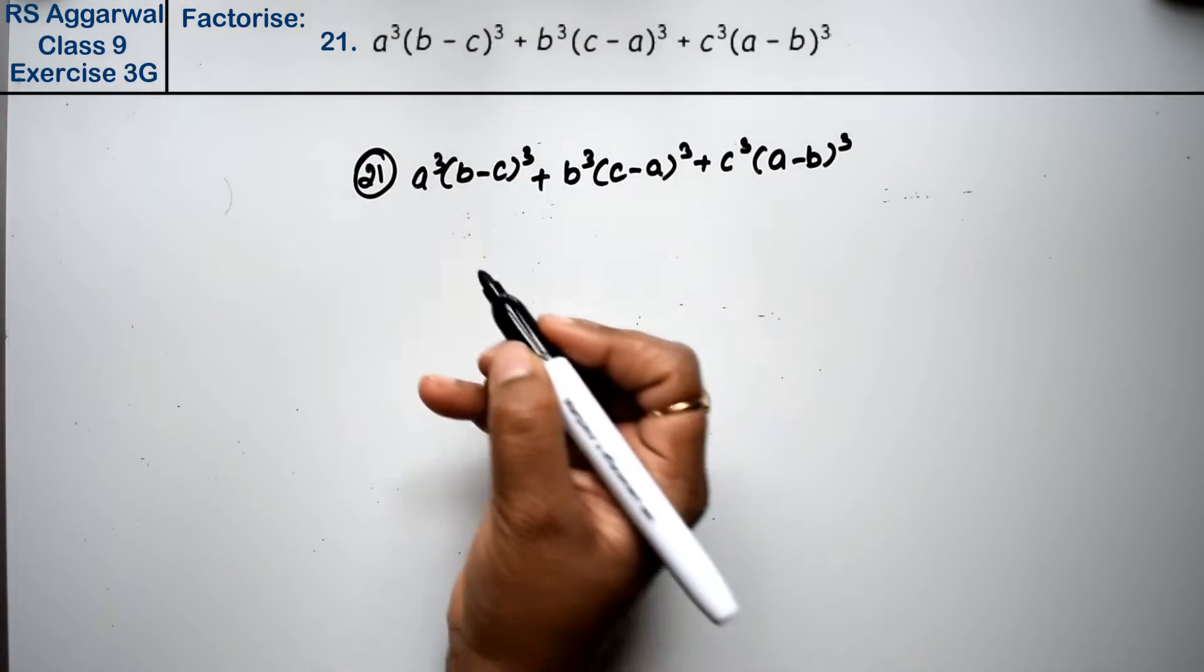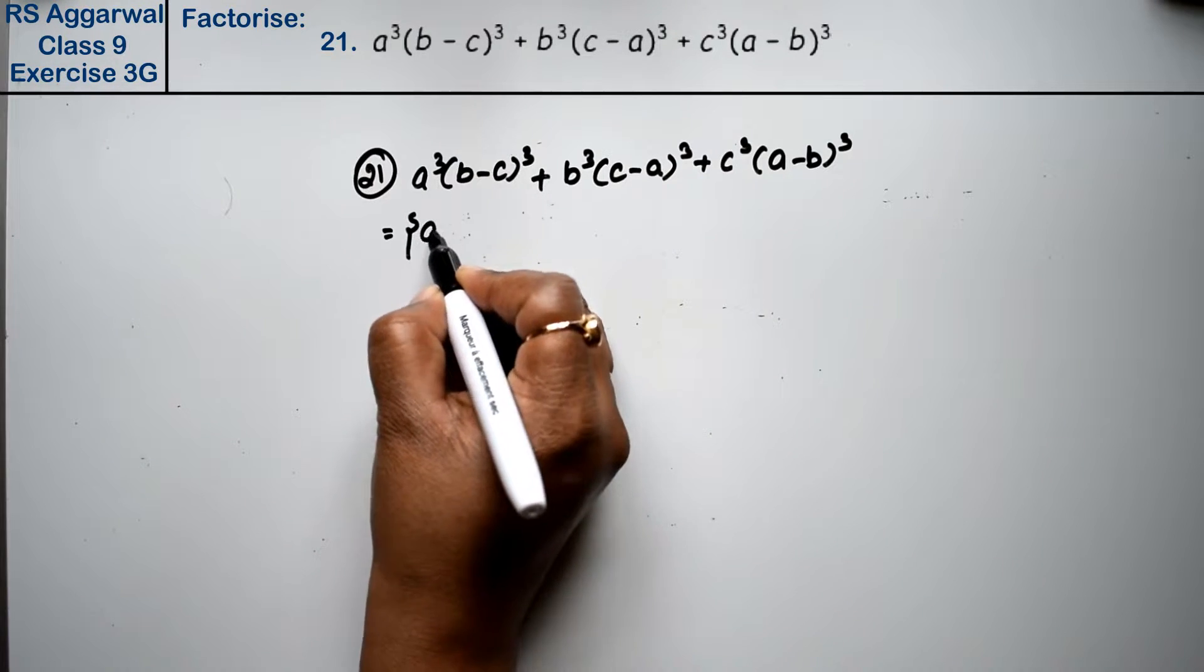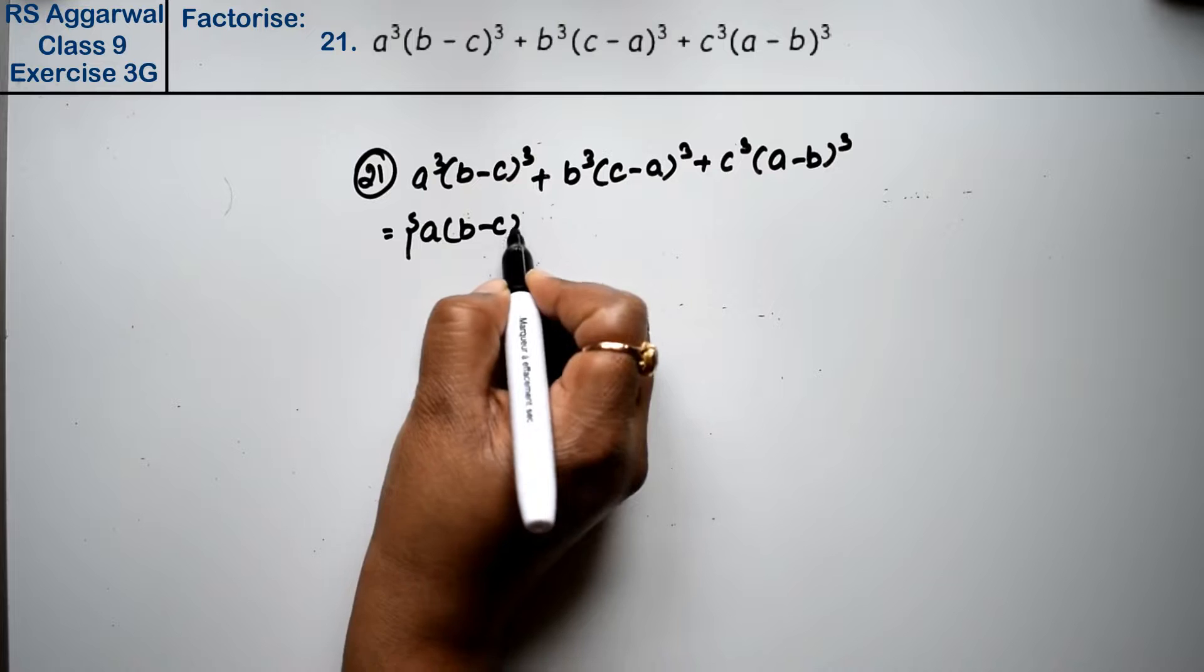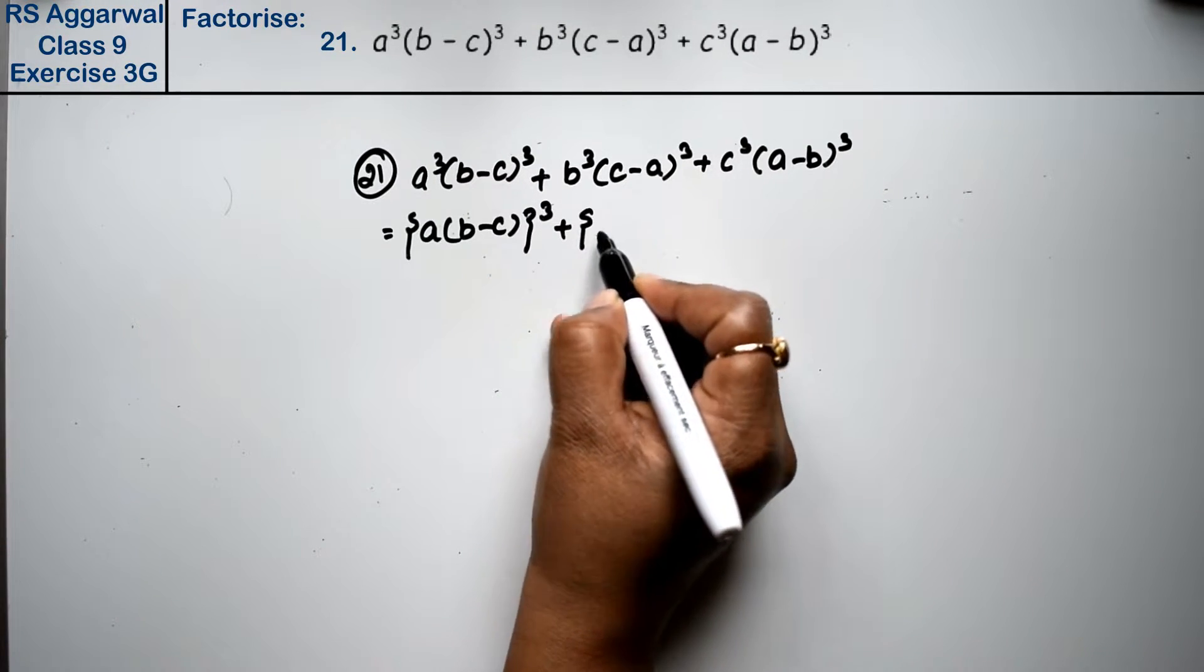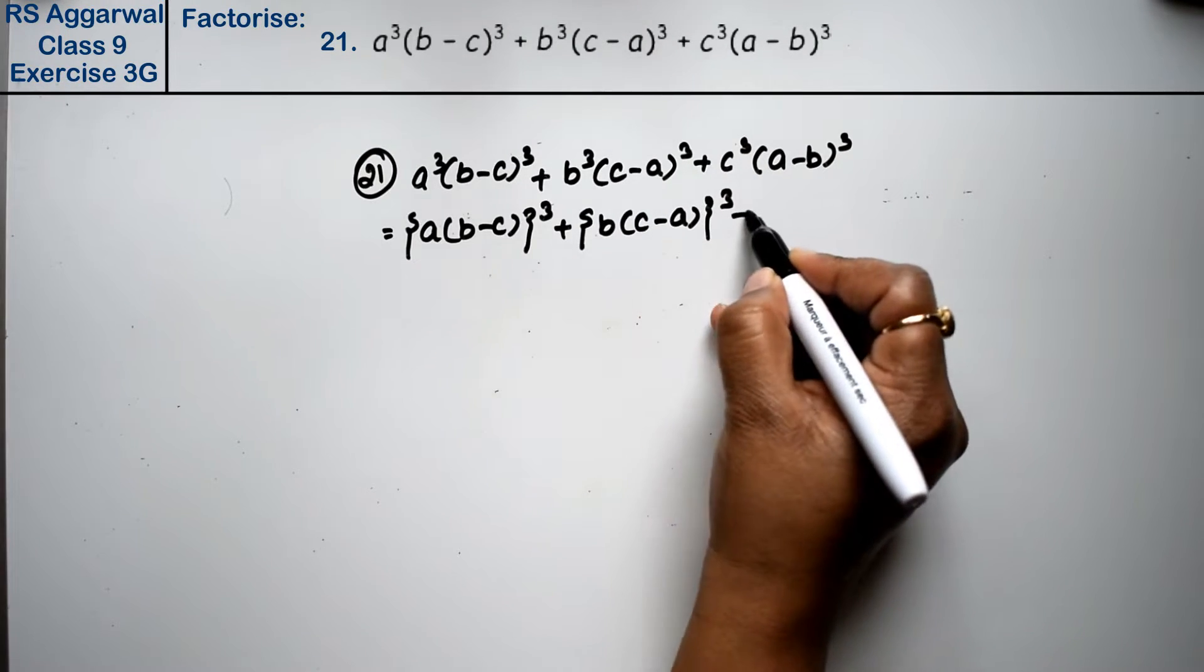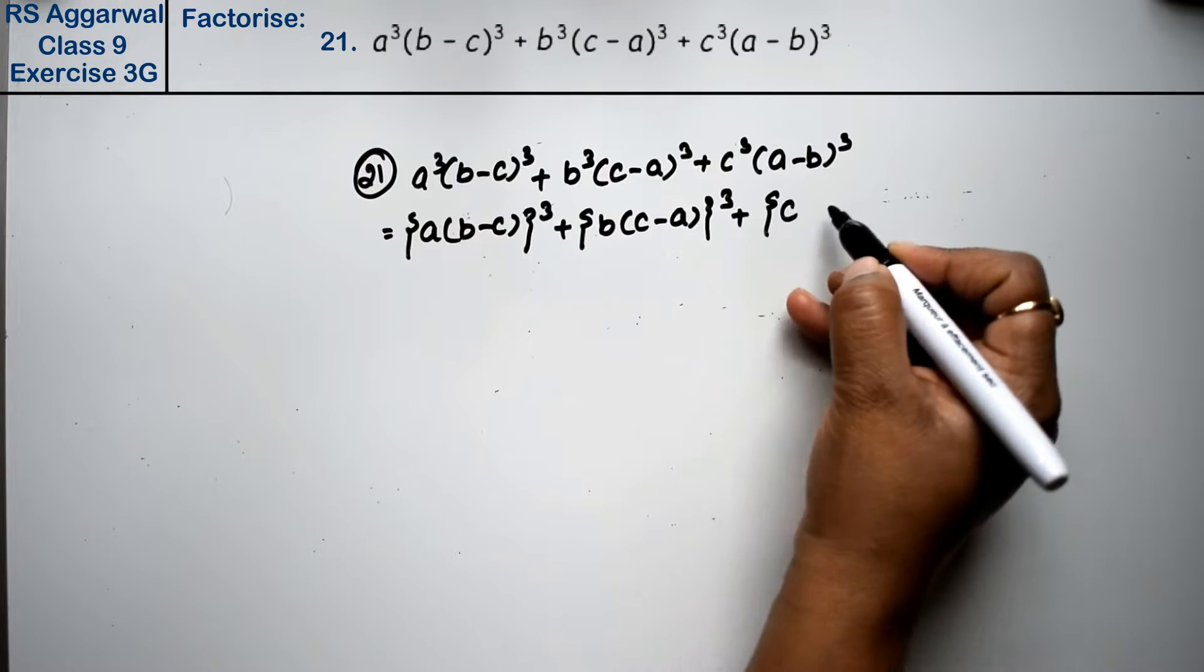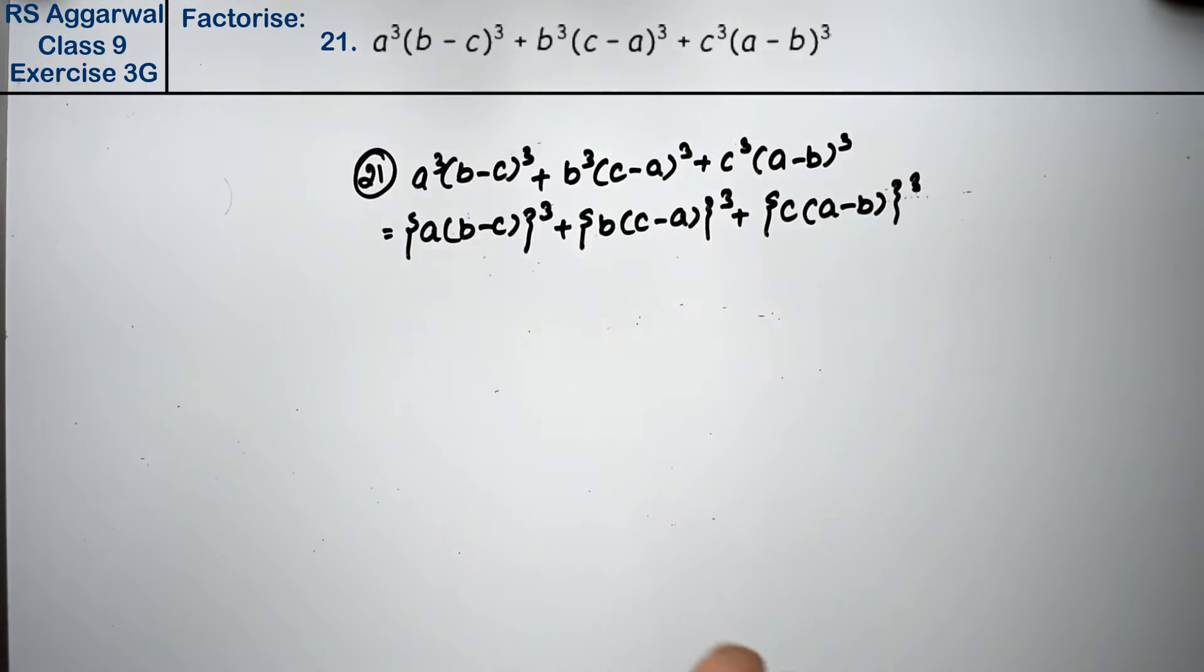Friends, here we can write this: a(b - c) whole cube plus b(c - a) whole cube plus c(a - b) whole cube. These three cubes are shown here.